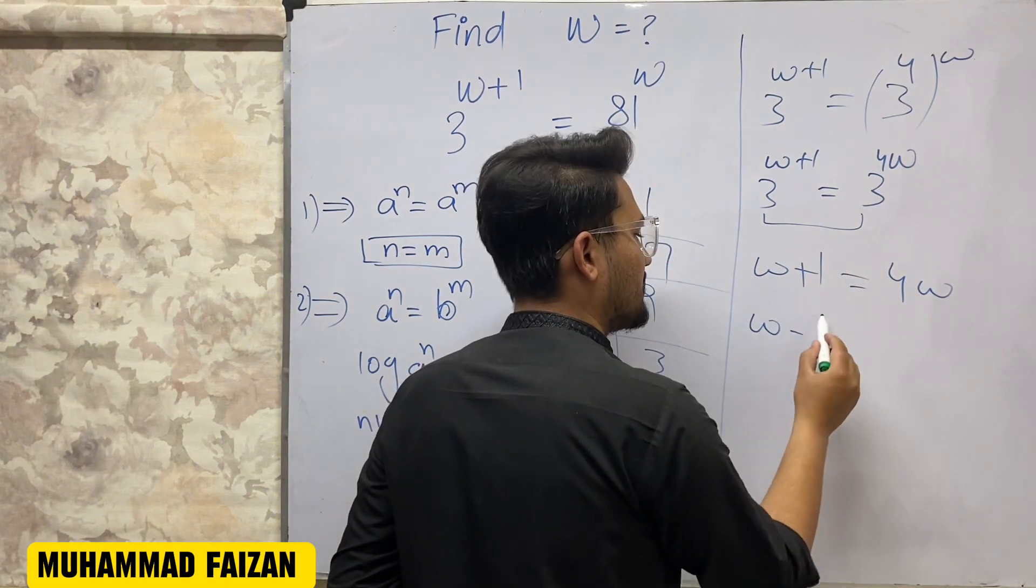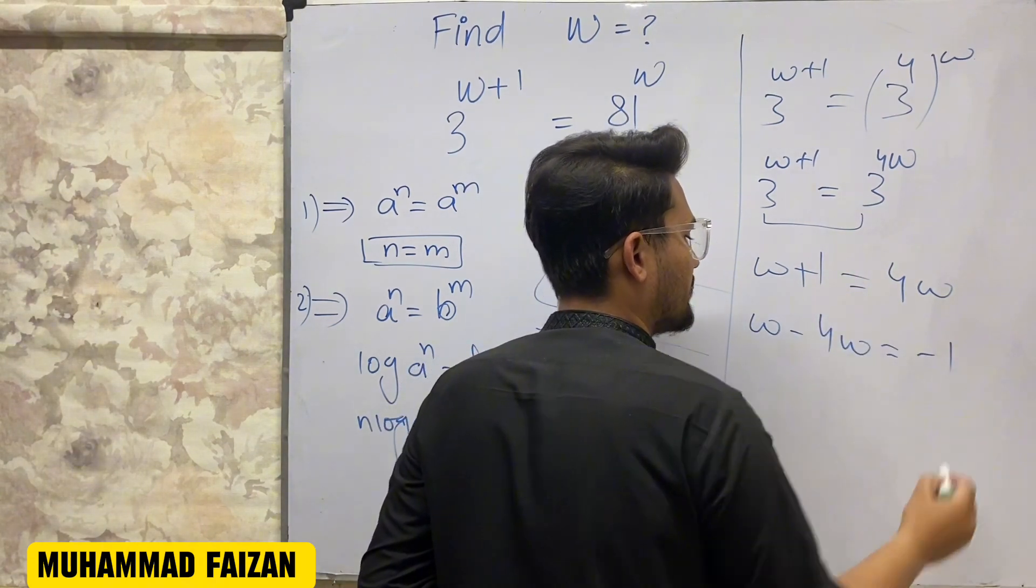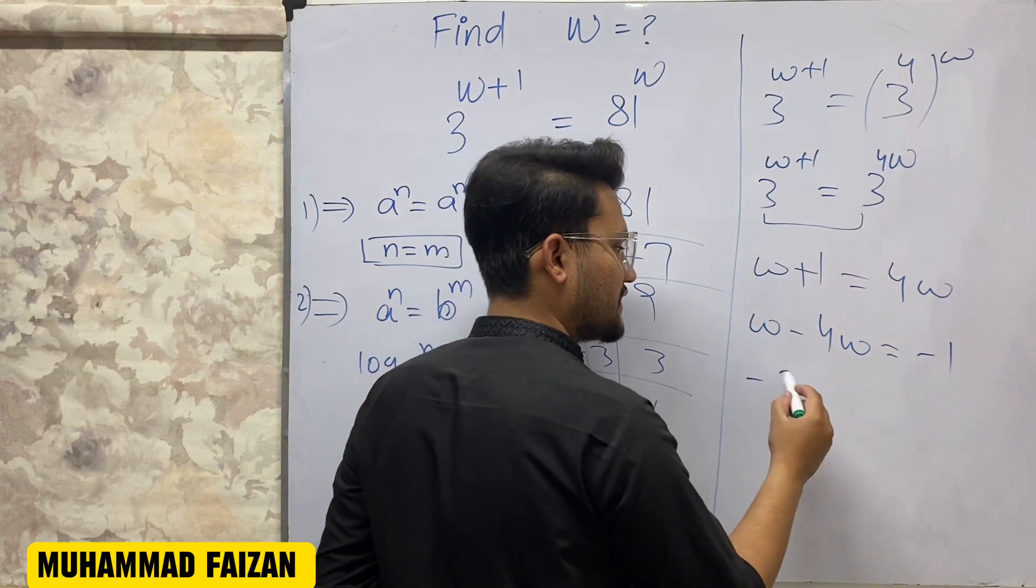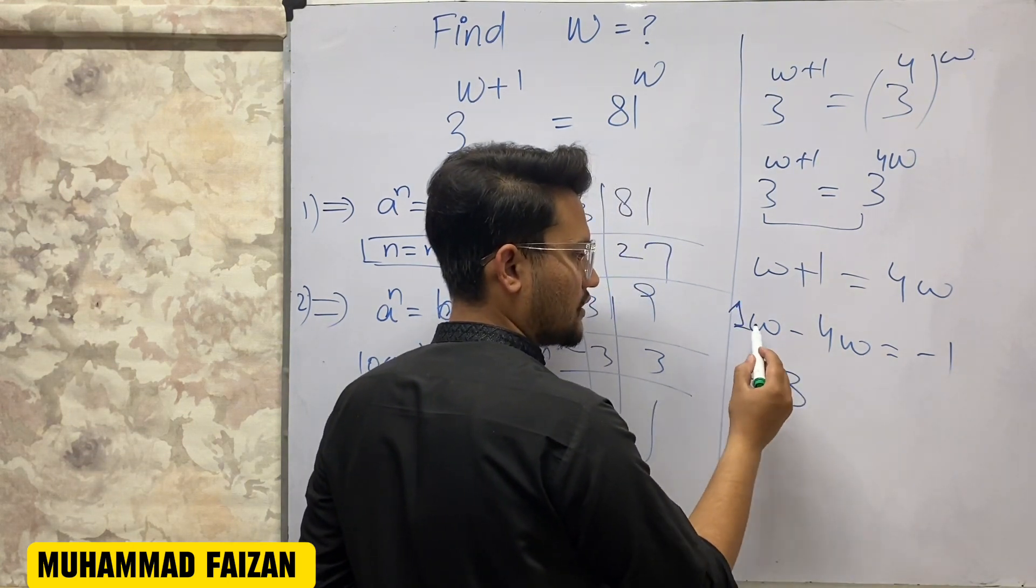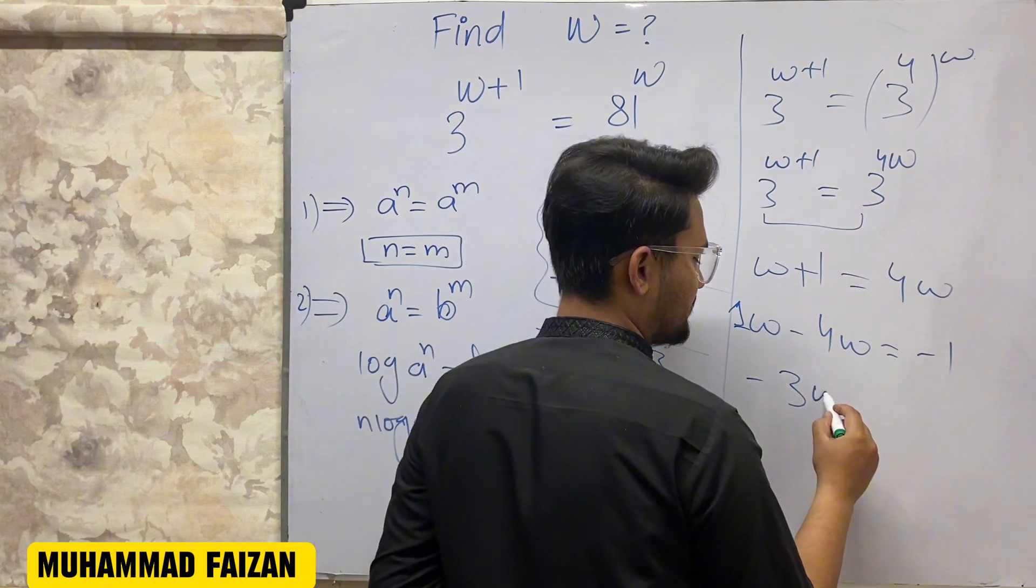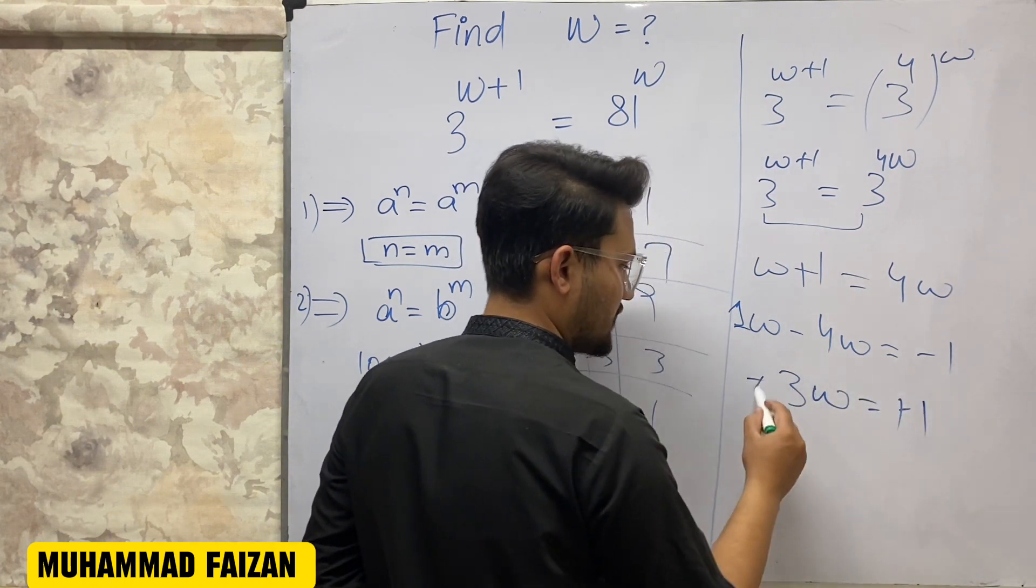Another step: W minus 4W is equal to negative 1. When you shift the terms, W minus 4W becomes negative 3W is equal to negative 1.